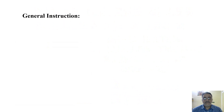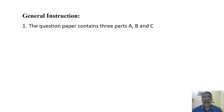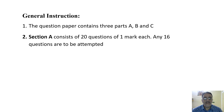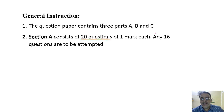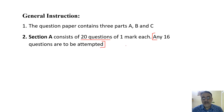The whole paper is divided into three sections. Section A contains 20 questions of one mark each, that means 20 marks, but any 16 questions are to be attempted — not all. The first 16 attempted questions will be taken as final.